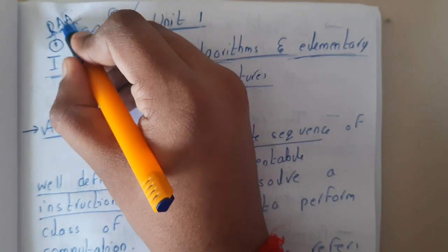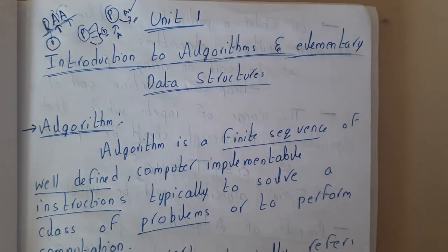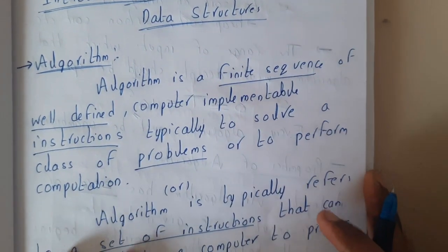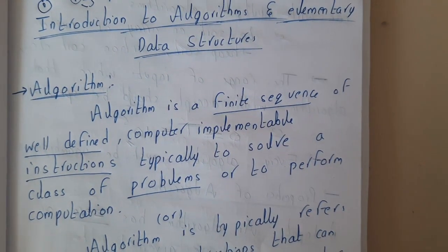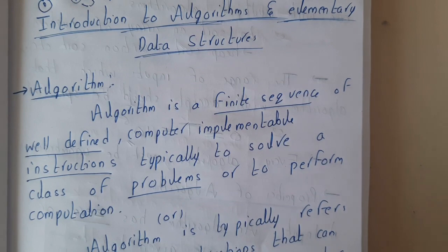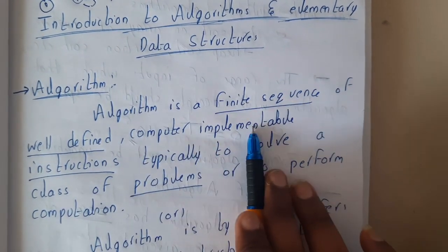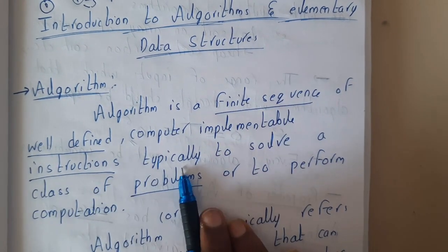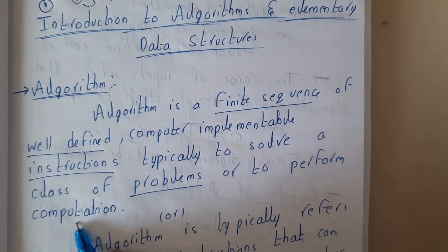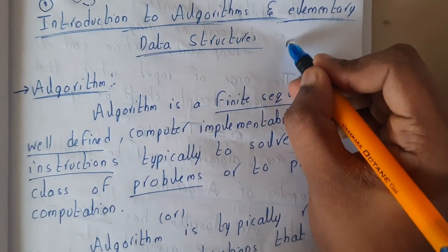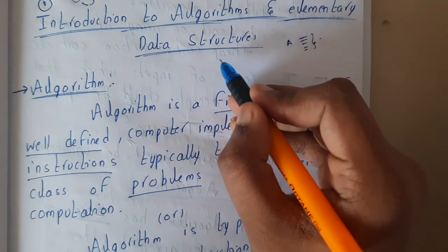First let us learn what an algorithm is, then we will move on to analysis and then to design. Basically, we write programs every day, right? Those are nothing but algorithms. An algorithm is a sequence of well-defined computer implementation instructions, typically to solve a class of problems or to perform a computation. Basically, an algorithm is a set of instructions or steps.